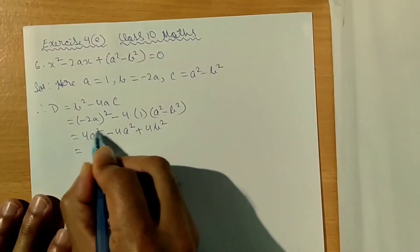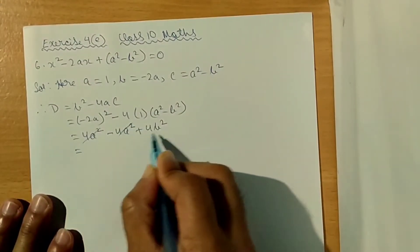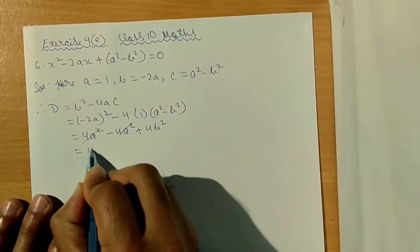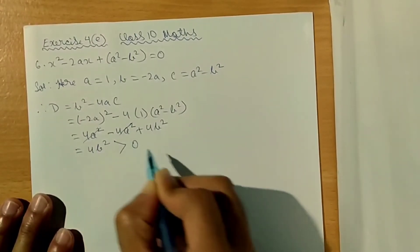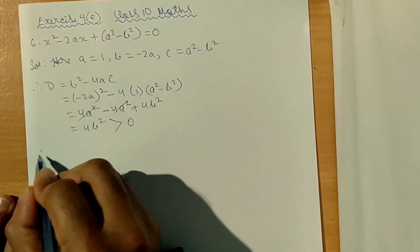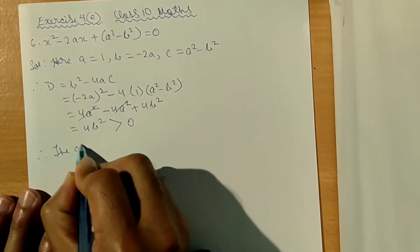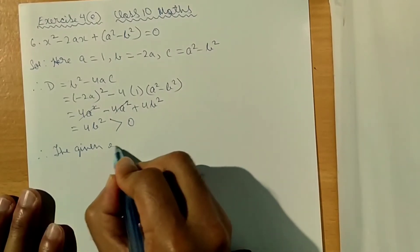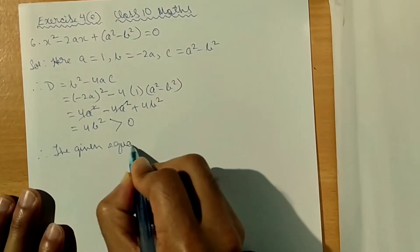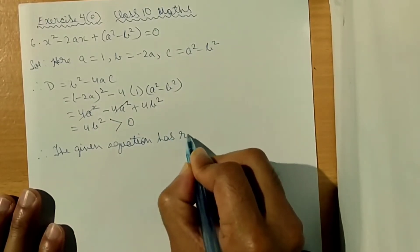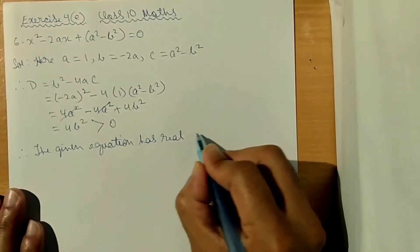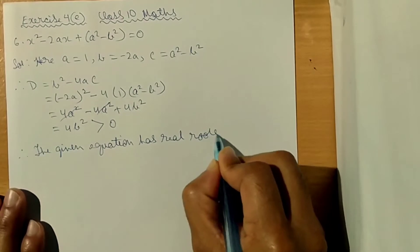So the 4A squared minus 4A squared is 0, so we have 4B squared. And this is greater than 0. Therefore, the given equation has real roots.